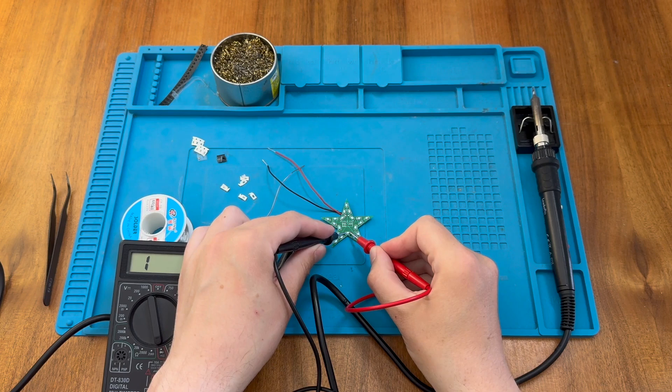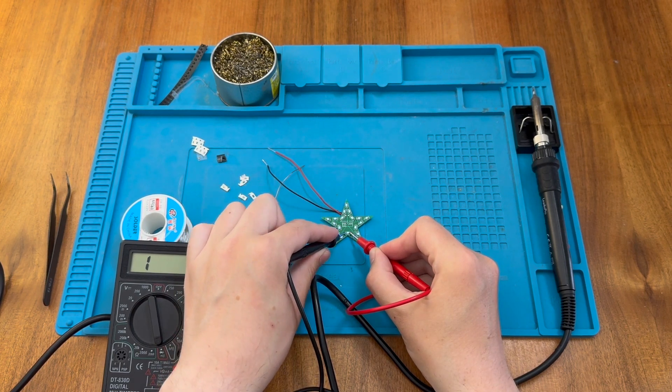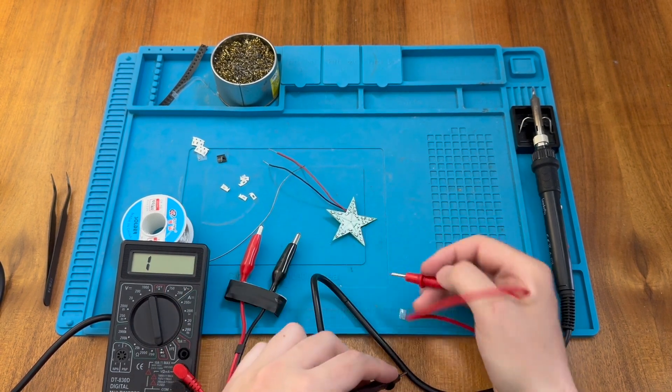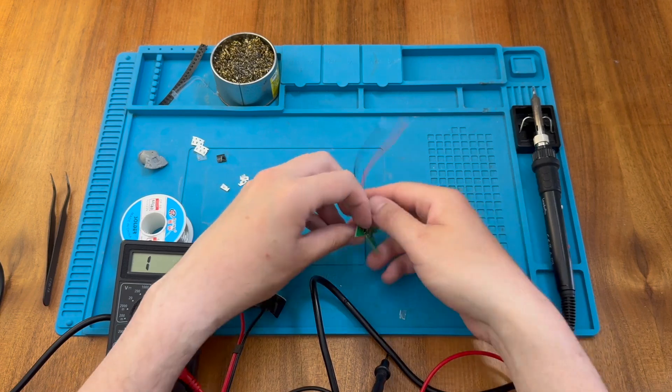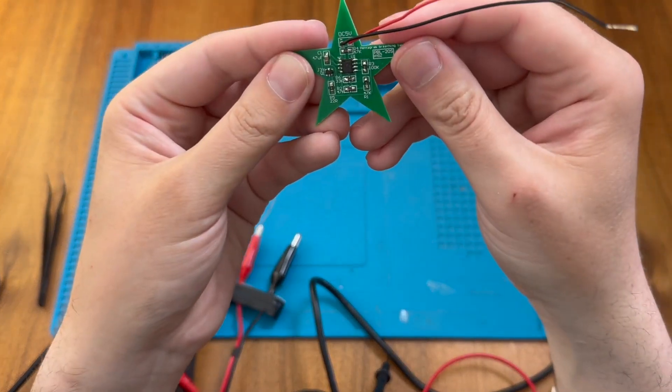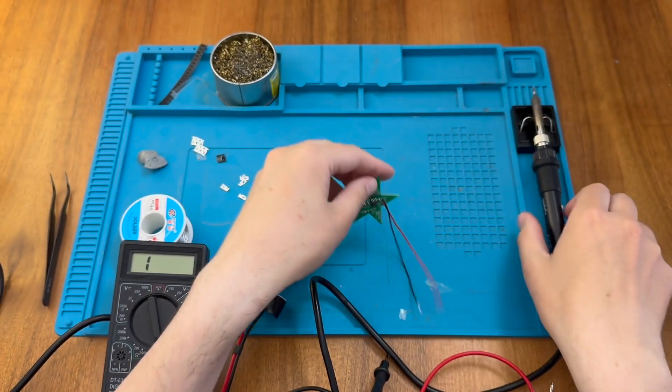And there we go. So they're all lighting up with positive to negative. So all the LEDs appear to be in place correctly. So it's not this side of the board that's at fault. So what's gone wrong on this side here? Maybe there is a problematic joint.